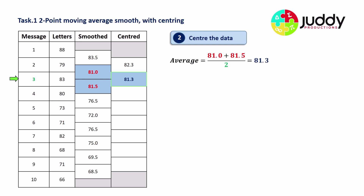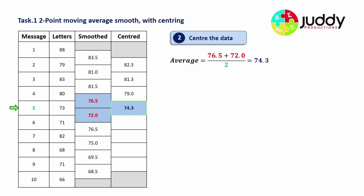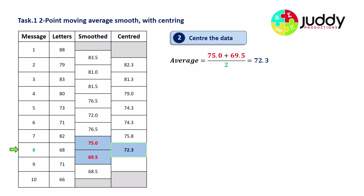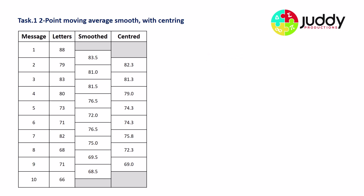Moving down one more, we average 81 and 81.5, divide by two, getting 81.25 centered against message three. We continue: 79 centered against message four, 74.3 against five, 74.3 against six, 75.8 against seven, 72.3 against eight, and the final centered value of 69 against message nine.